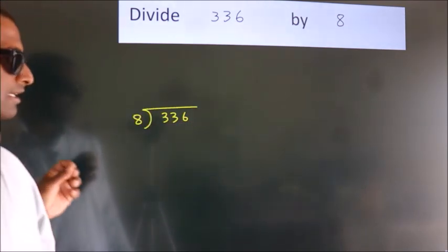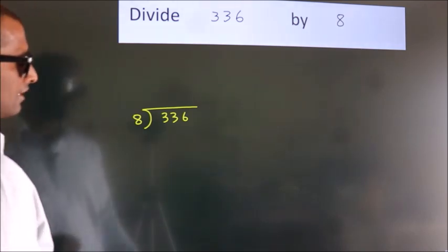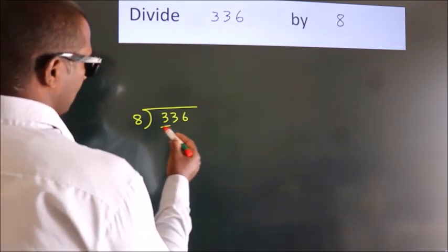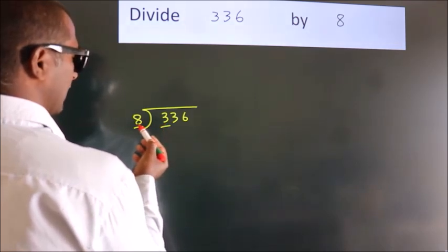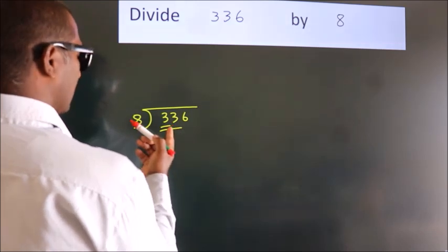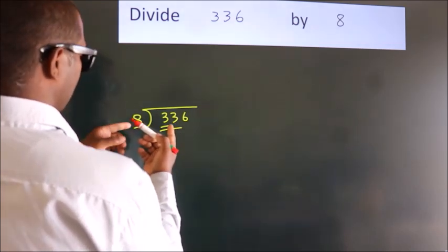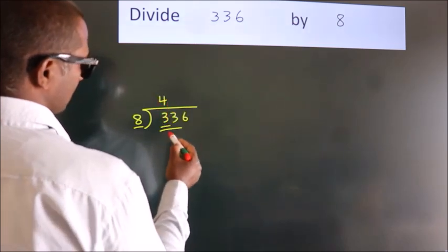This is your step 1. Next, here we have 3, here 8. 3 is smaller than 8, so we should take two numbers, 33. A number close to 33 in the 8 table is 8 fours, 32.